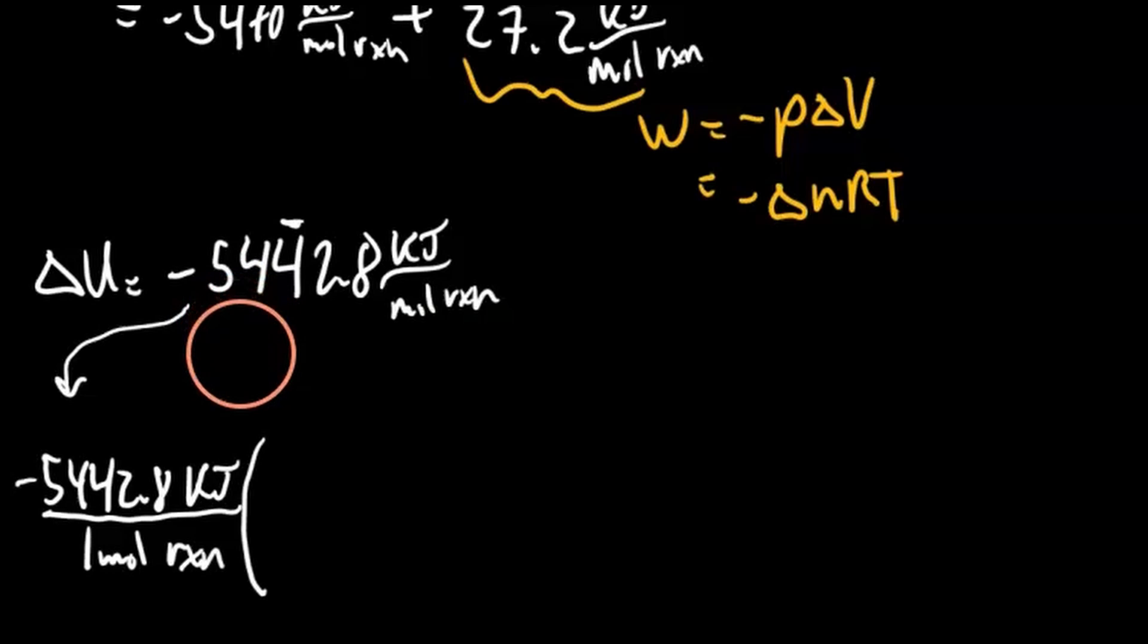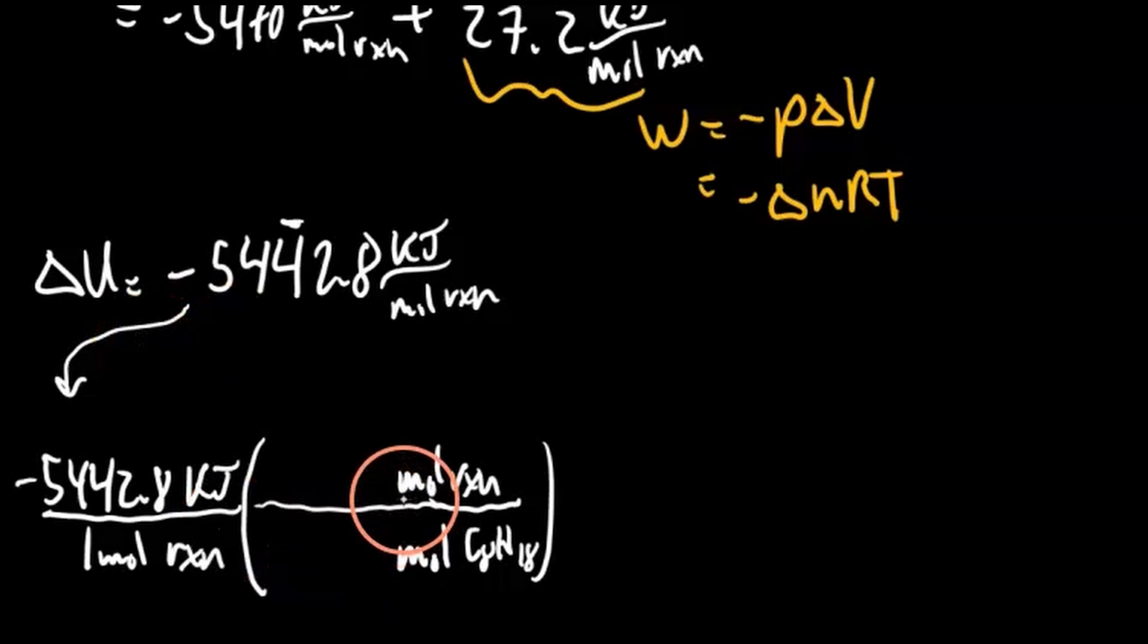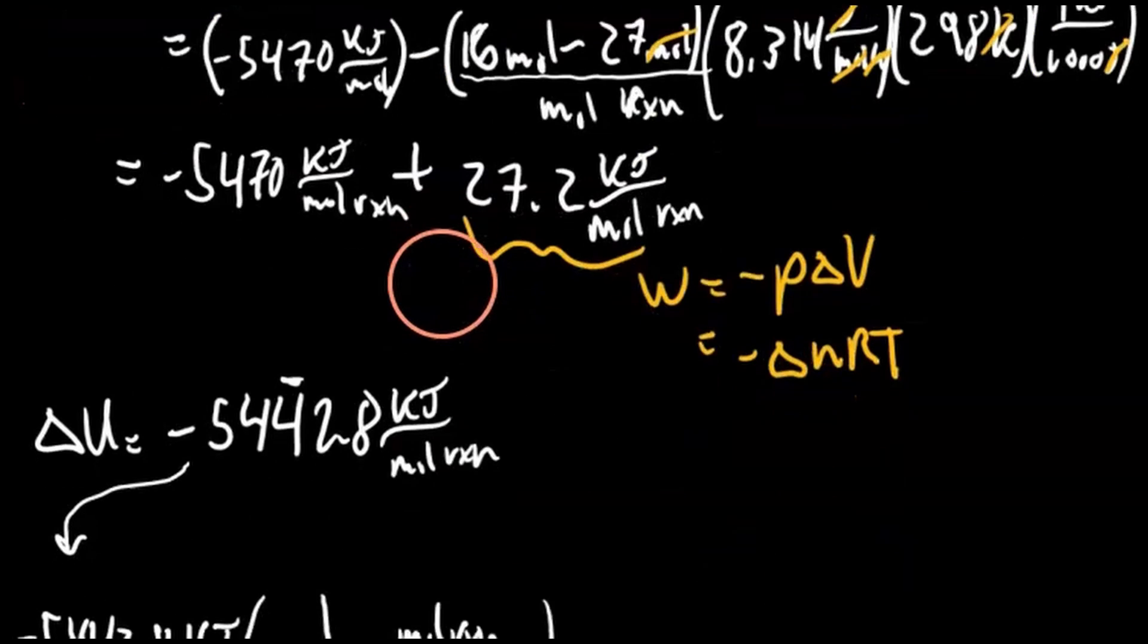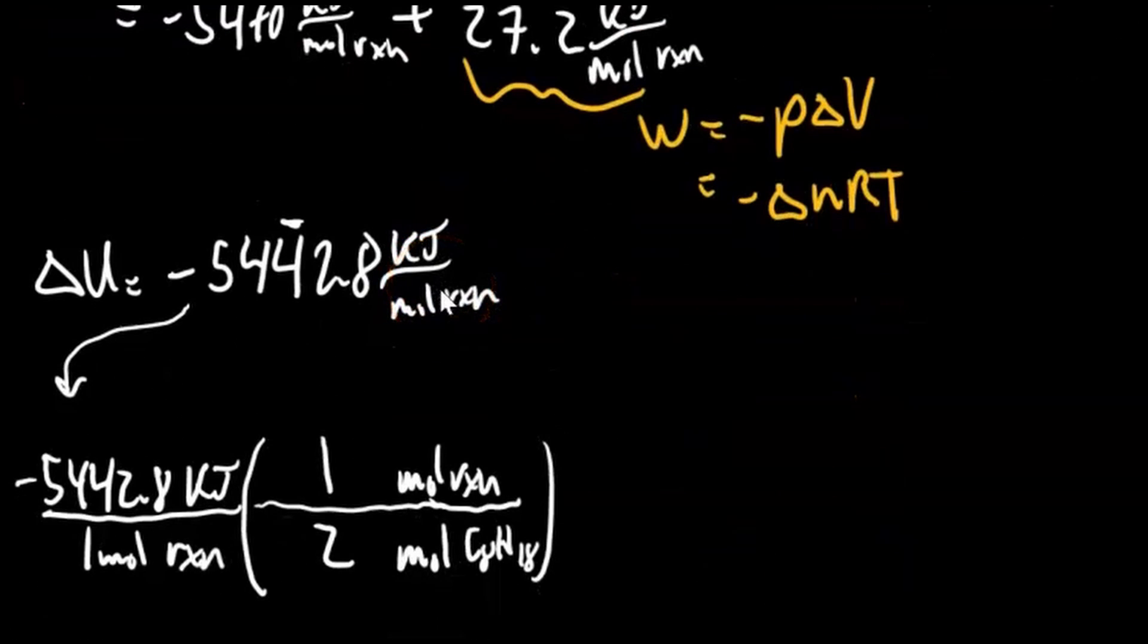Now, we want to get to octane. So we want to cancel out moles of the reaction, and we want moles of our octane, C8H18. For every one mole of the reaction, every time a mole of the reaction occurs, we need two moles of octane. So it's a one to two ratio. Now that we're in moles of octane, which is what we want, we can get to grams. So we'll use the molar mass. We want to cancel out moles of octane.